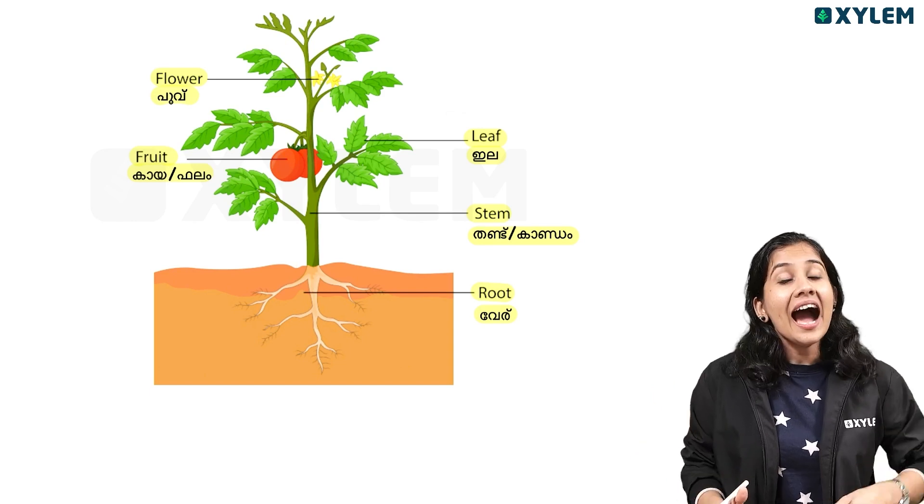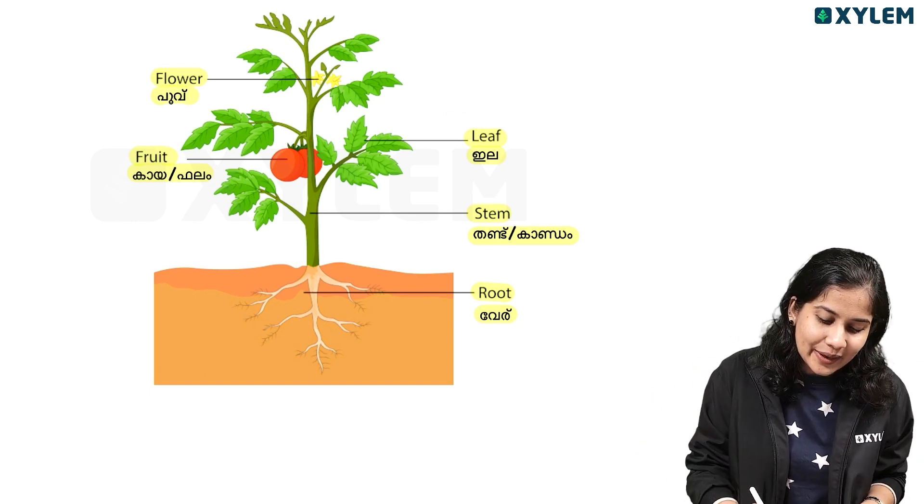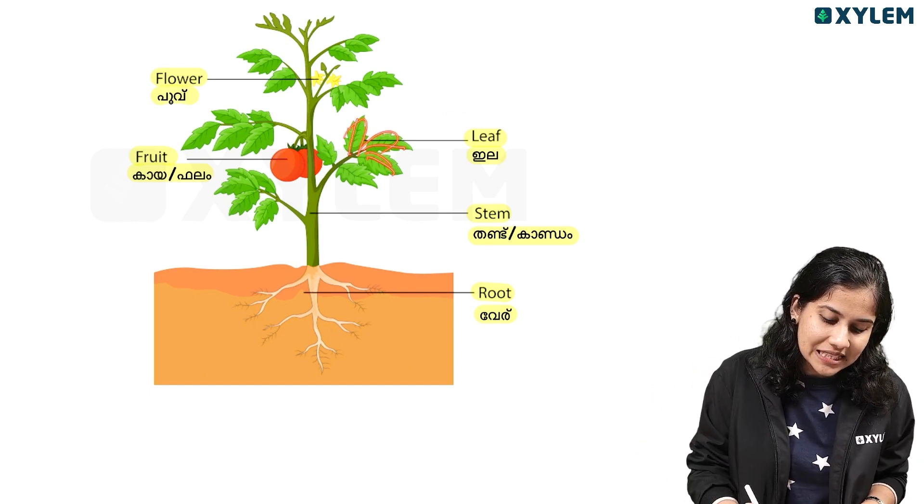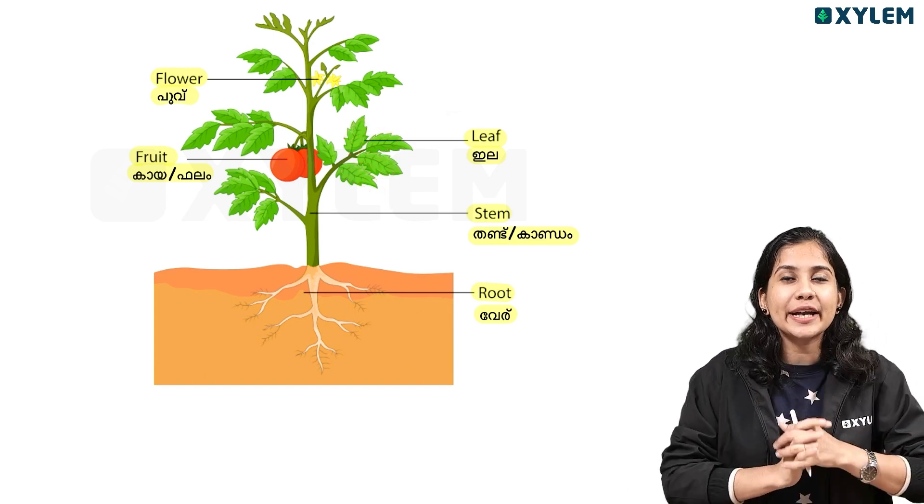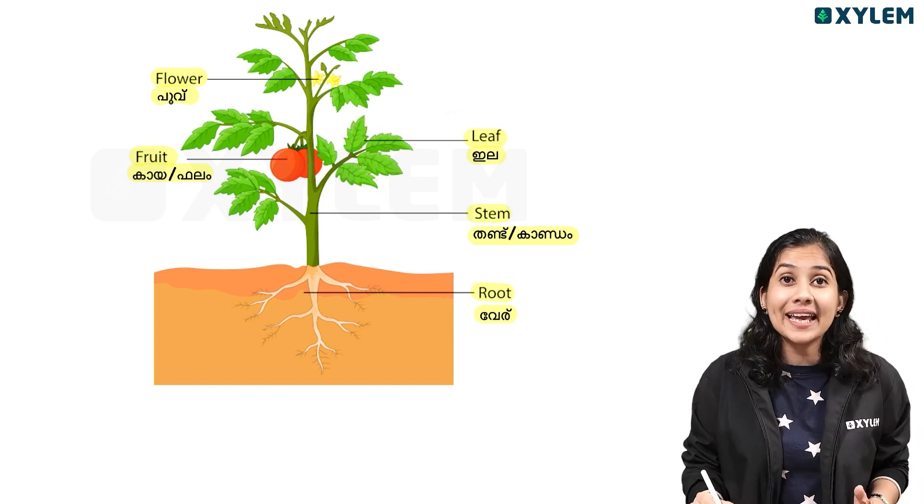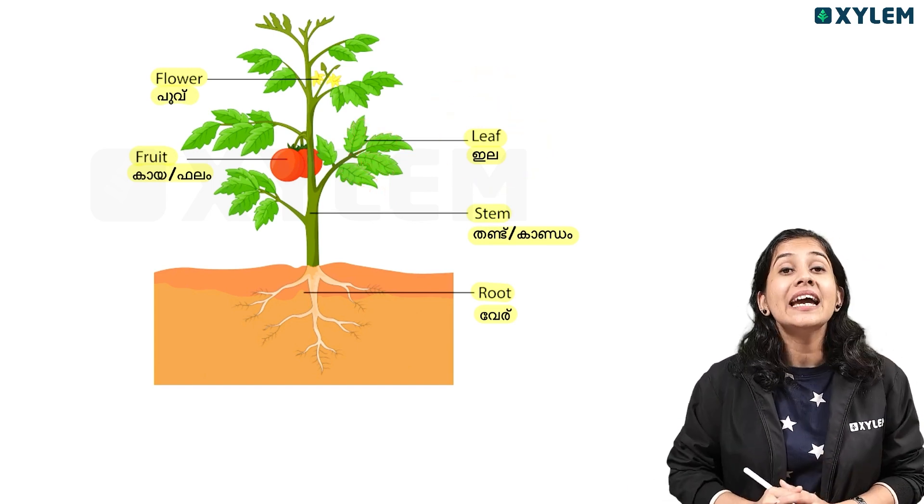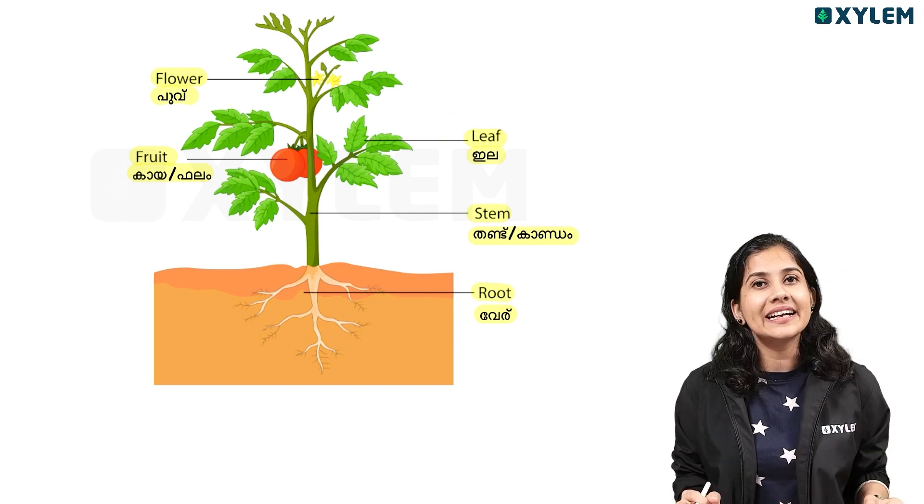We call it a leaf. We call it a leaf. We call it food. The leaves are on the tree. This is part of the tree.